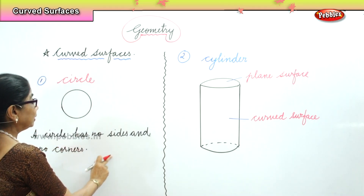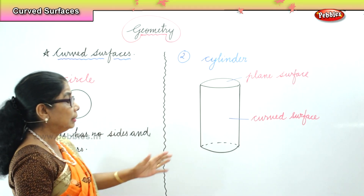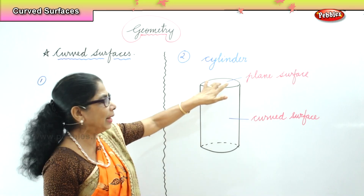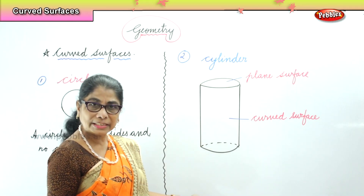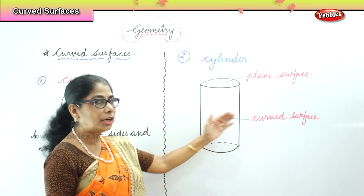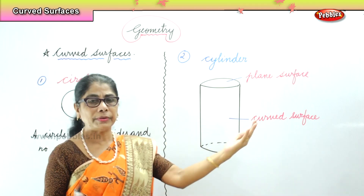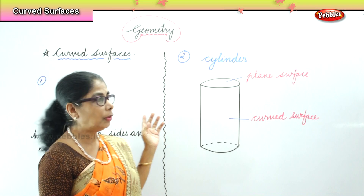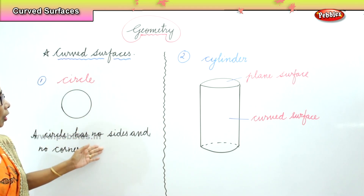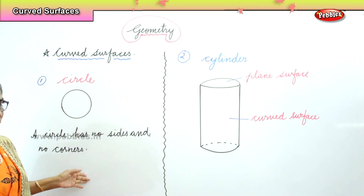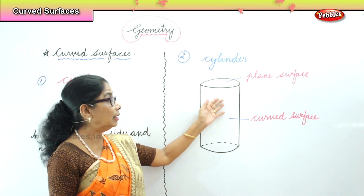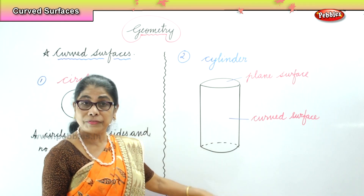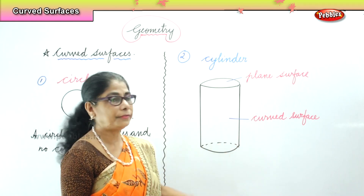A circle has no sides, no corners. Similarly, the cylinder has a curved surface right around it. What do we remember about the circle? The circle has no corners, no sides. Similarly, a cylinder has only two plane surfaces and a curved surface.